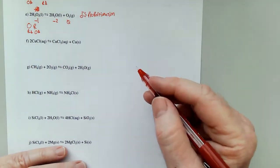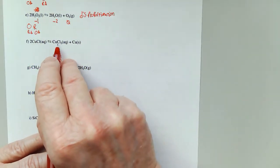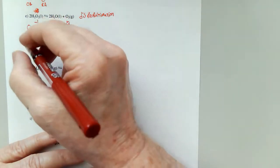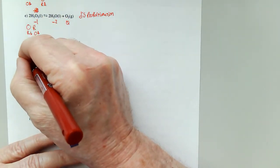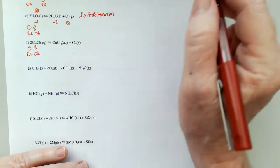The same thing happens here in letter F. The Cu's are going from a plus one to a plus two, and from a plus one to a zero. So oxidized and reduced, reducing agent and oxidizing agent, and again, this is a disproportionation.